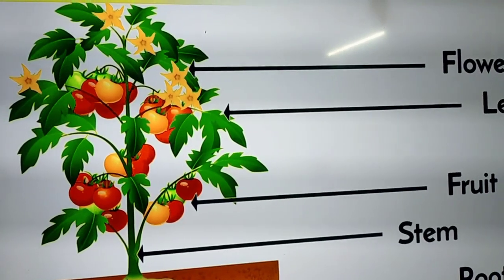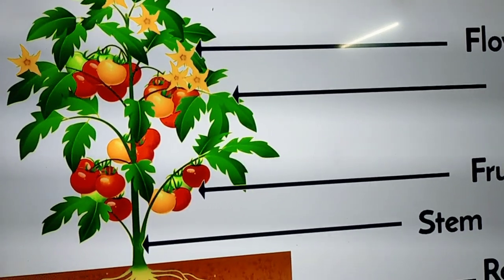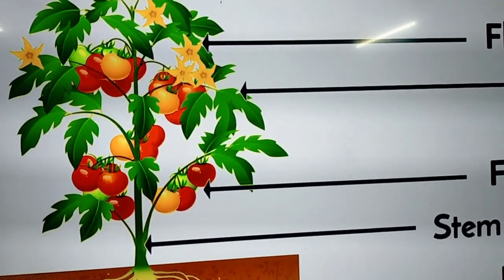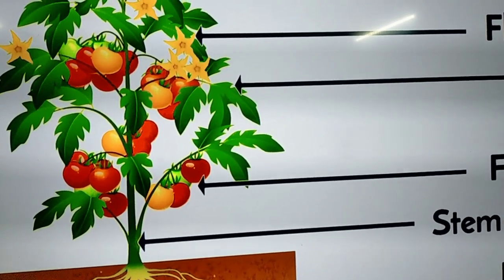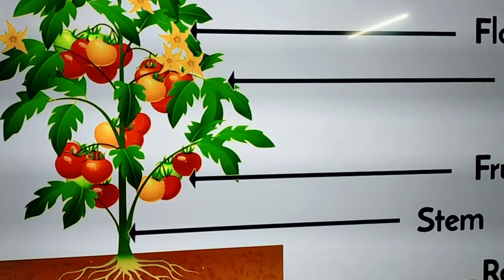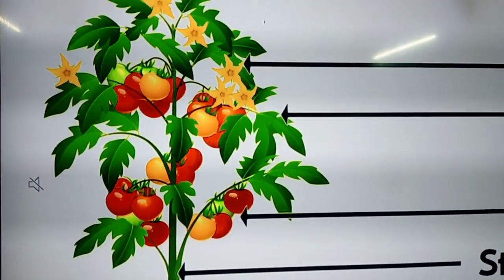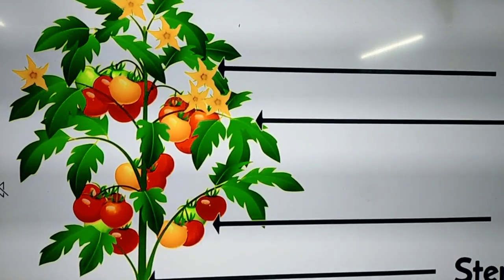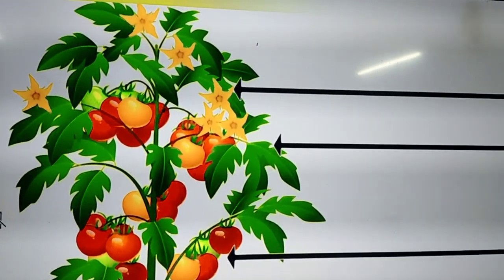Kids, in this video we are going to learn about one of the interesting and very easy topics from EVS, and these notes will be helpful for classes 2, 3, 4 as well as 5. This is the basic content, and the topic is parts of the plant — the different parts of the plant. So let us start.